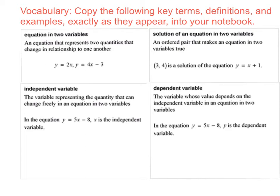Independent variable is the variable representing the quantity that can change freely in an equation in two variables. A dependent variable is the variable whose value depends on the independent variable in an equation in two variables.